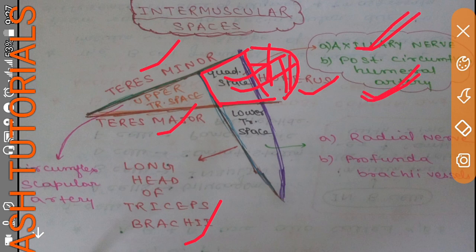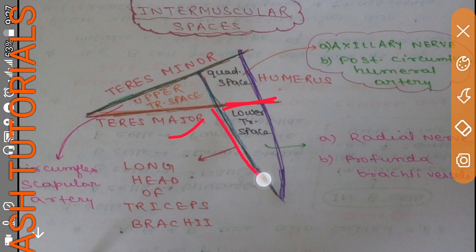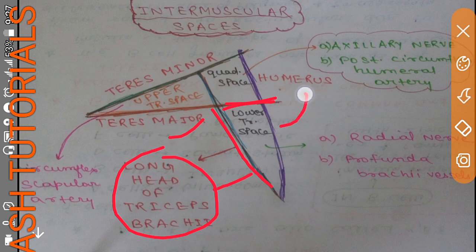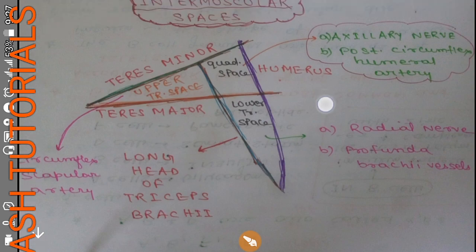Now coming to the lower triangular space: superiorly it is bounded by teres major, medially by the long head of triceps brachii, and laterally by the humerus. There are two structures passing through it: the radial nerve and the profunda brachii vessels.